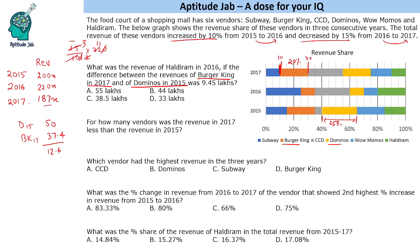Burger King 2017 is 20% of 187x = 37.4x and Domino's 2015 is 25% of 200x = 50x. Subtracting gives 12.6x. The given difference is 9.45, and we observe 315x × 3 = 9.45 and 315x × 4 = 12.6, so the multiplying scale factor is 3/4. Haldiram in 2016 (the green one) has a 20% share: 20% of 220x = 44x. Multiplying by 3/4 gives 33 lakhs.